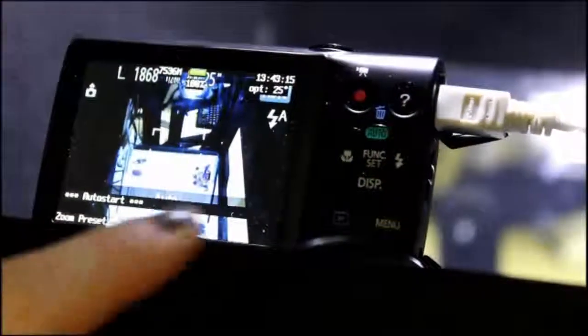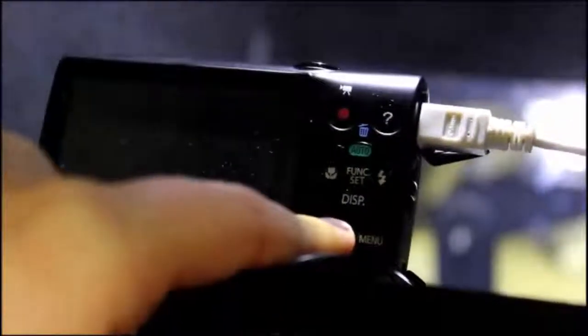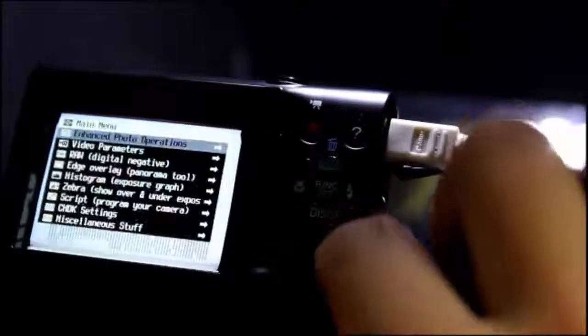Once the camera is on, hold the play button until you enter the review photo setting. Once there, press the play button once. Alt should appear on the bottom of the camera screen. Press the menu button to bring up the CHDK menu.